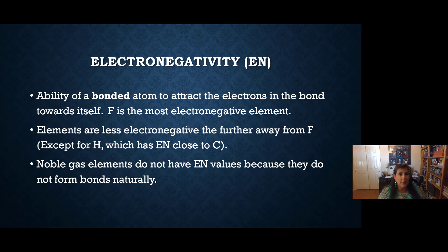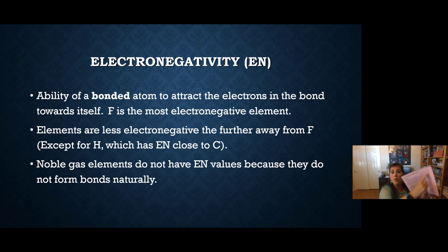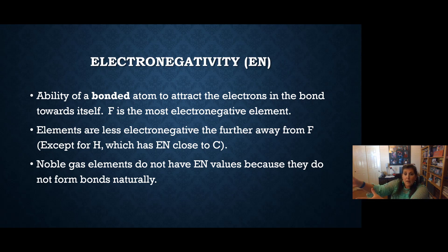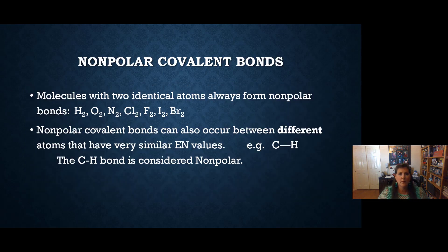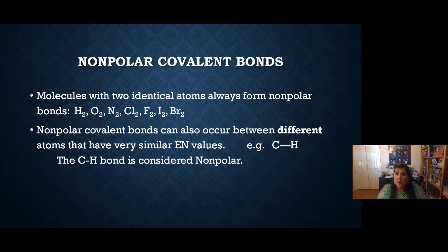That's why fluorine is the most electronegative — it's the most up and to the right element in the table. Fluorine is the most electronegative atom, pulling electrons close. The closer you are to fluorine, the better you are at pulling those bonded electrons close to you. Electronegativity increases as we move up the table and to the right, except the noble gases don't play this game. Molecules with two identical atoms always form a nonpolar bond, like H-H, I-I, or Cl-Cl. When you're bonded to yourself, you have a nonpolar bond.